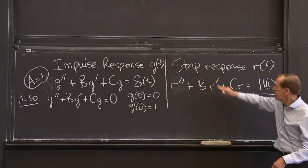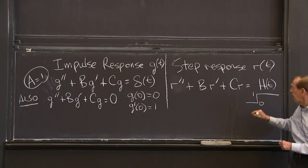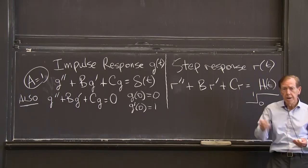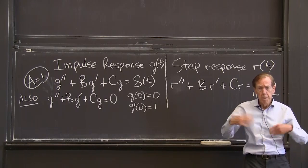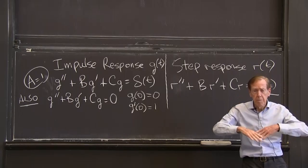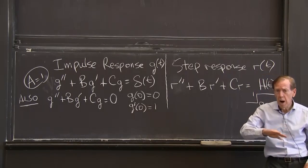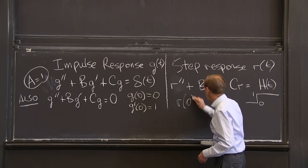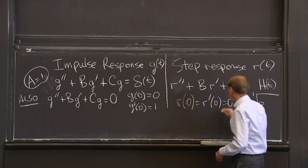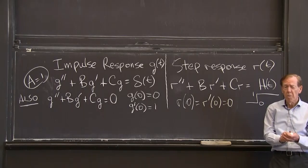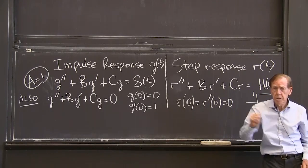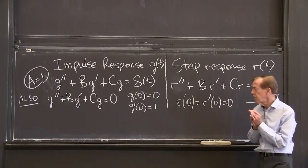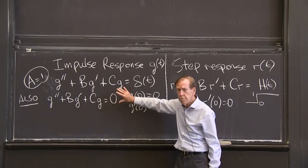The other interesting possibility is when the right-hand side is a step function, and then we want the response to that function. I click a switch, the machine starts working, and it approaches a steady response. The solution rises from 0, so it starts at r(0) = r'(0) = 0. The step response starts from rest. The action happens when I click a switch at t equals 0, and then r(t) will rise to a constant. Very important solutions.